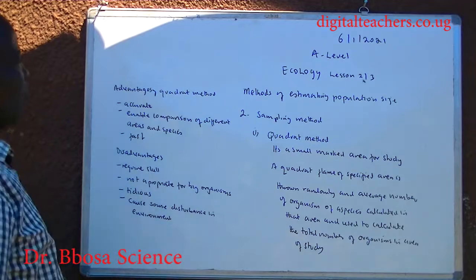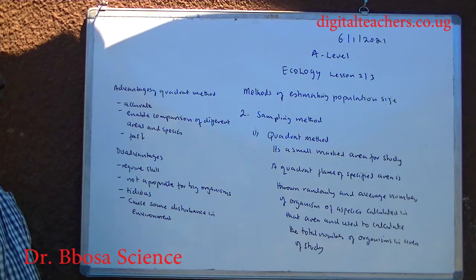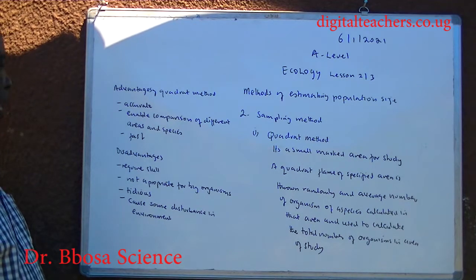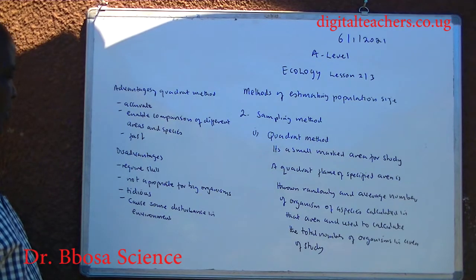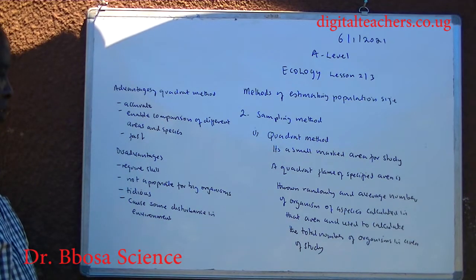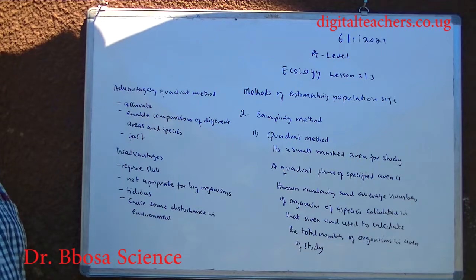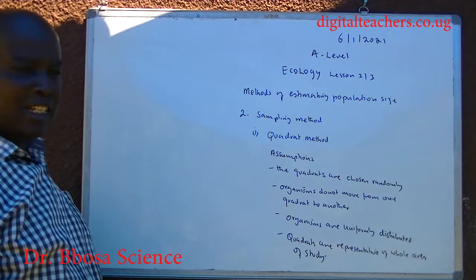Advantages of the quadrat method: it is accurate, it enables comparison of different areas, and it is fast. Disadvantages: it requires skill, it is not appropriate for big organisms, it is tedious, and it causes some disturbance in the environment.